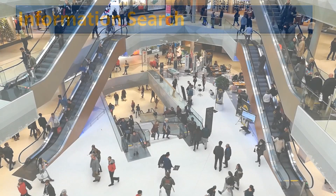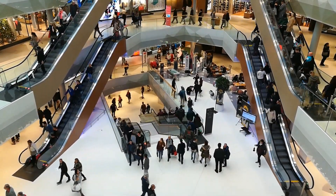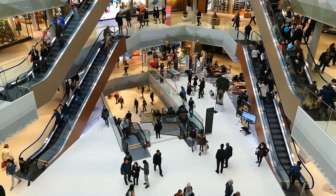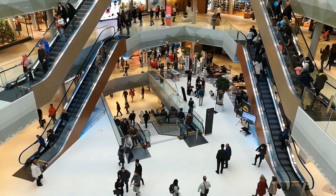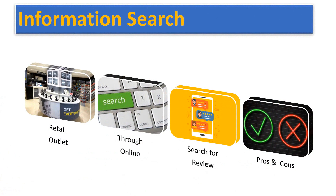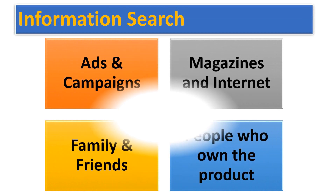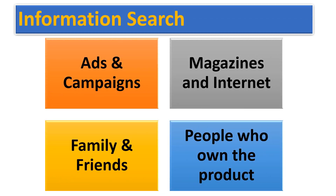The second stage is information search. Once a consumer decides to buy a new smartphone, they search for information about the product. The consumer might visit a retail outlet to check the product physically, or browse online through Google or YouTube, and go through all the reviews. Information can be obtained through commercial sources like advertisements, public sources like radio, newspaper, or magazines, or personal sources such as recommendations from family, friends, or people who already own and have experience with the product.